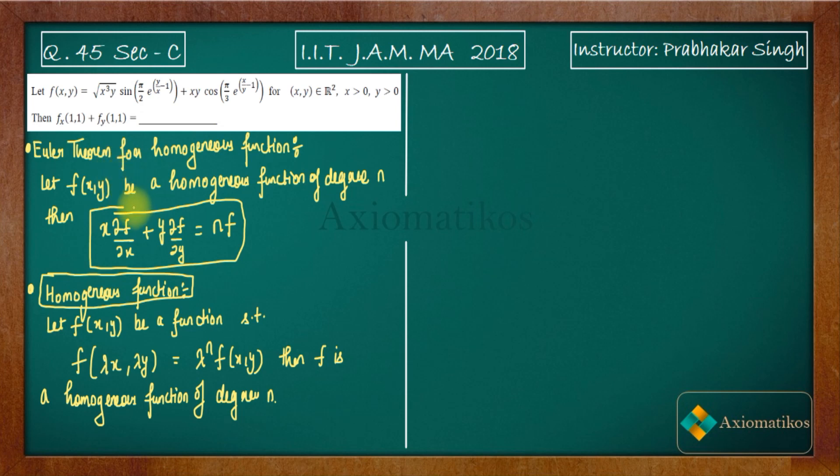Have a look at these two things. The first theorem is called Euler's theorem for homogeneous functions: if f is a homogeneous function of degree n, then this relation holds. The second defines homogeneous functions: a two-variable function is homogeneous if f(λx, λy) = λⁿf(x,y).